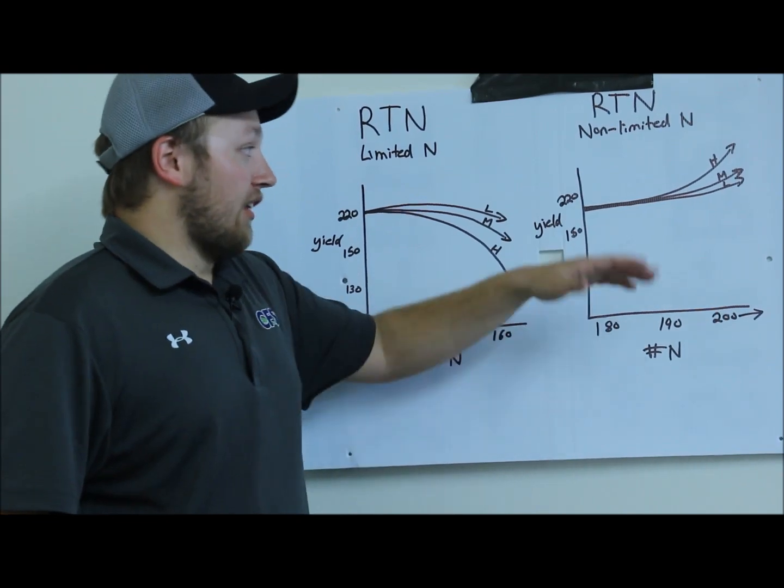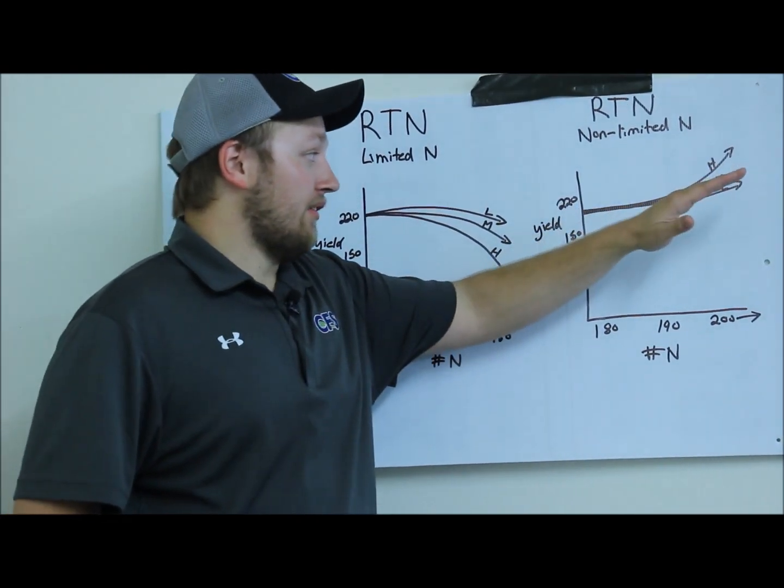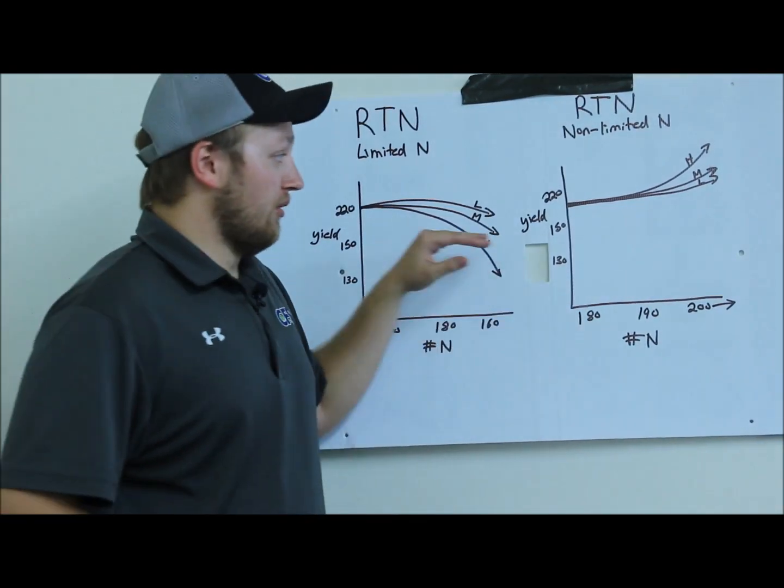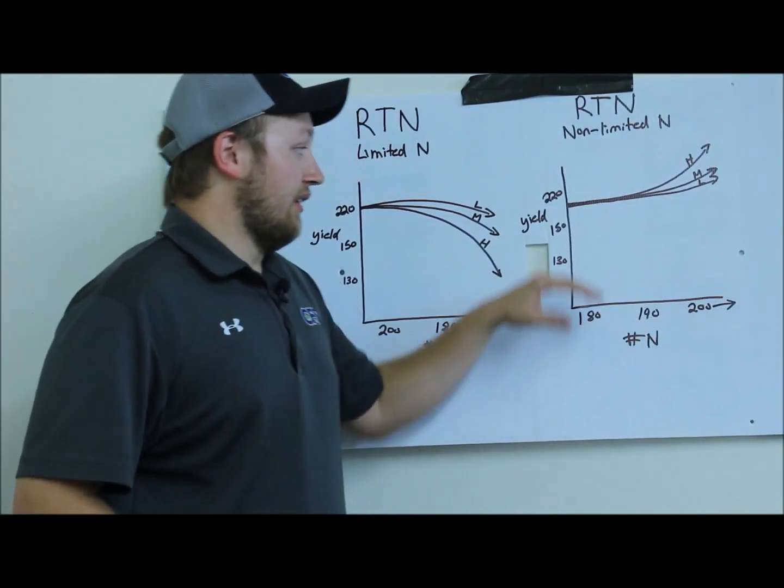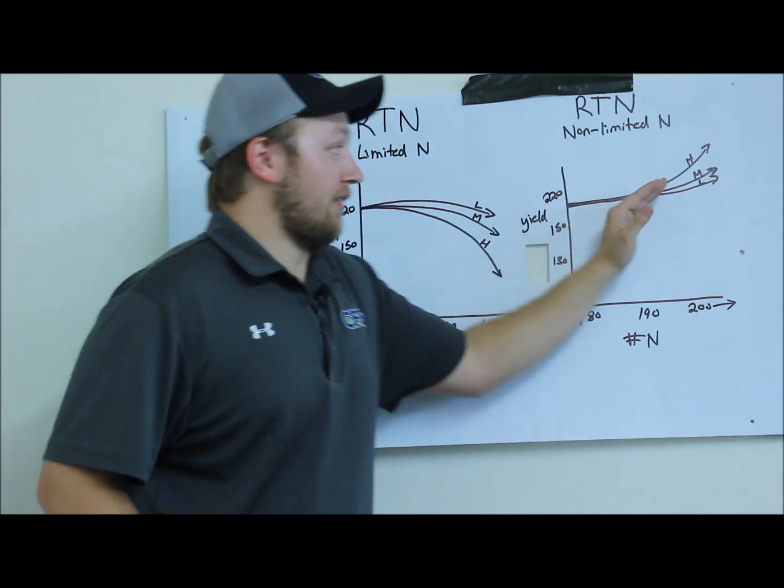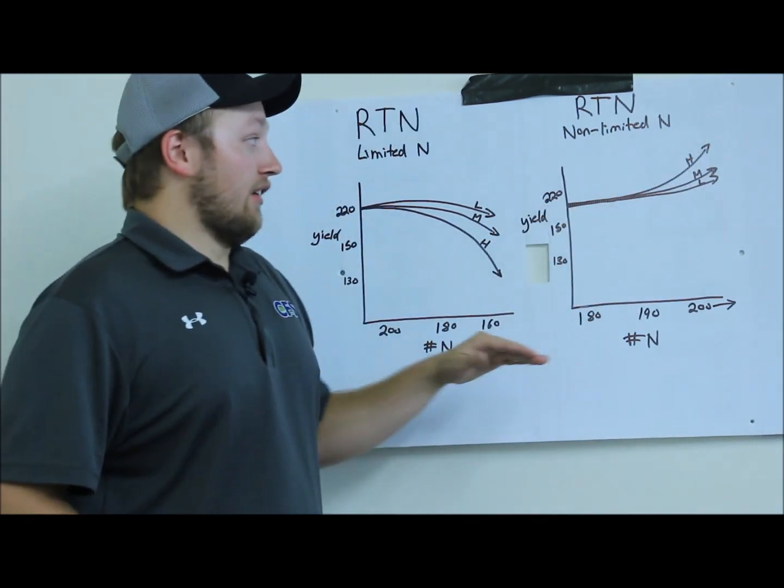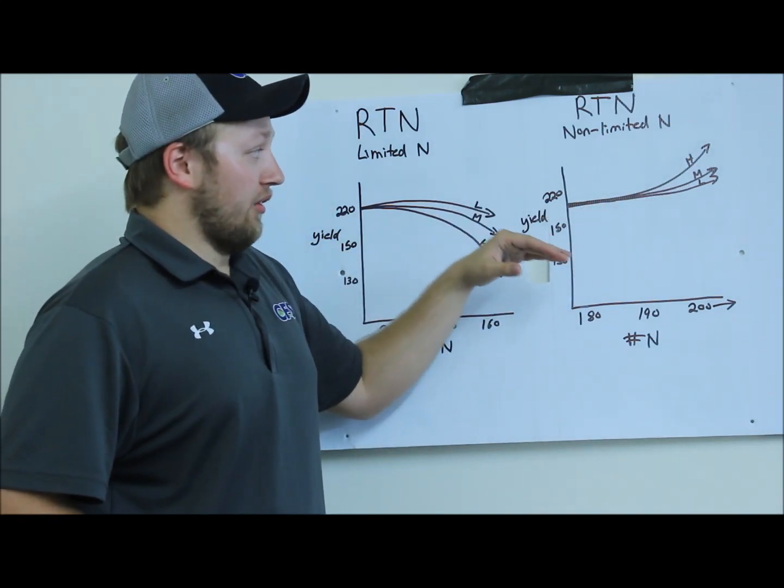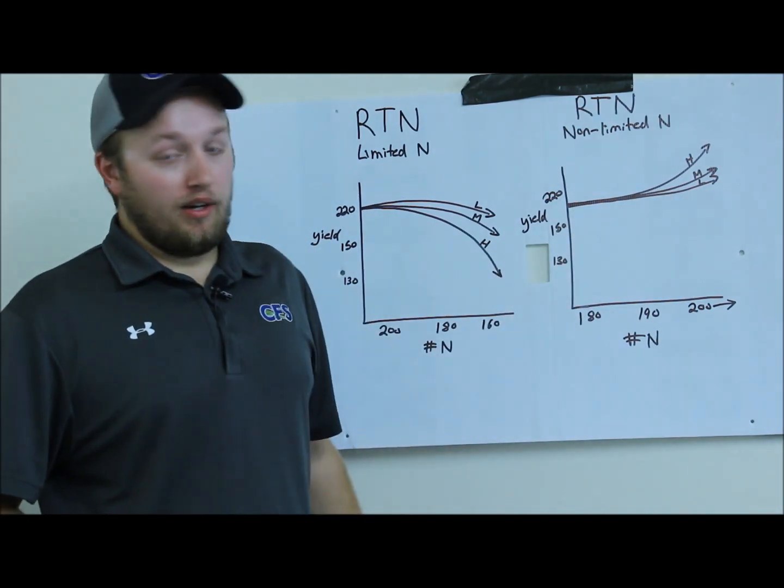Well, if you're managing like that, response to nitrogen on the high side for a certain hybrid might be the choice for you, because as you manage that and increase that nitrogen for that hybrid, the yield response going up is going to respond a lot better to that in-season nitrogen or just nitrogen in general than a medium to low response to nitrogen hybrid would.